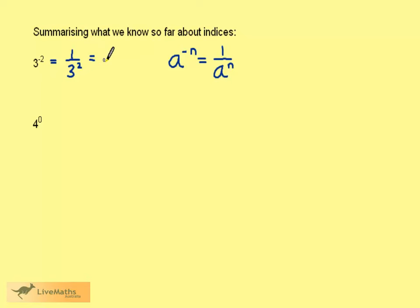3 squared we know is 9, so this evaluates to 1 ninth. We also know about the 0 index. Any number to the power of 0 is 1, and therefore 4 to the power of 0 is 1.